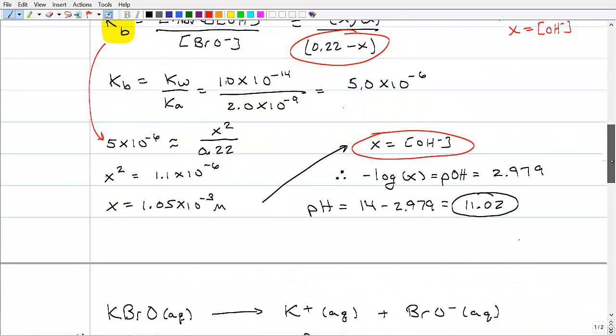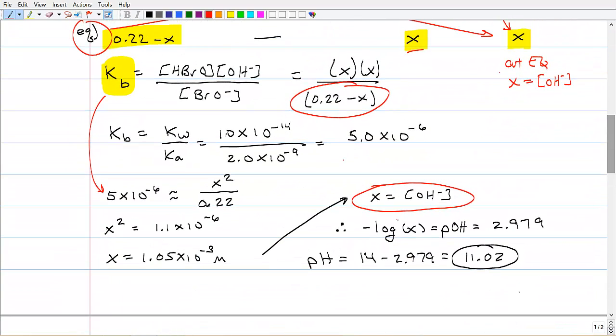So I go back down to my problem here. And since I've got my OH minus, I take the negative log of that. That's my pOH, and I find it to be 2.979. And then I finish off the problem by subtracting that 2.979 from 14, and I get an answer of 11.02. Just like we expected, this conjugate base created a basic solution.